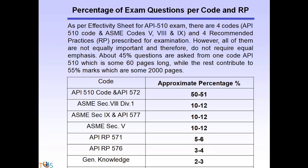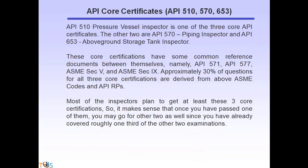ASME Section 8, Division 1, construction code for pressure vessels, is around 10 to 12%. ASME Section 9, welding, and API 577, welding inspection and methodology, around 10 to 12%. ASME Section 5, non-destructive testing, would constitute around 10 to 12%. API 571, damage mechanisms, 5 to 6%. API 576, 3 to 4%. General knowledge and safety each 2% to 3%.